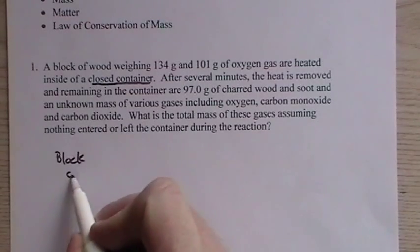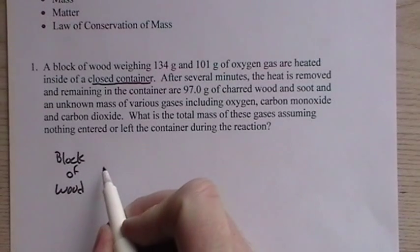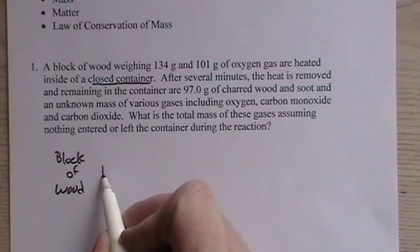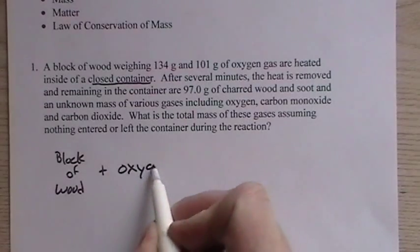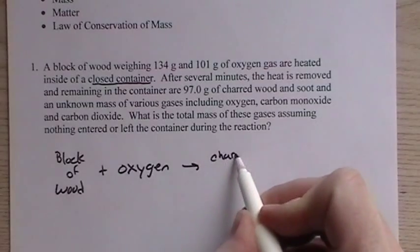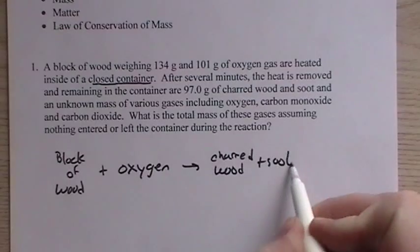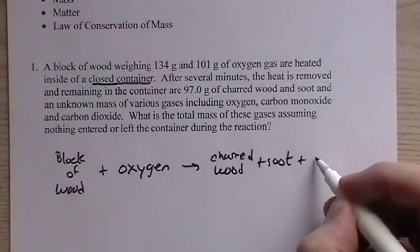We have block of wood. Normally we deal with pure compounds or elements. We don't deal with mixtures like this in the chemical reaction, but we can write it in this way. Block of wood plus oxygen produces charred wood plus soot plus gases.